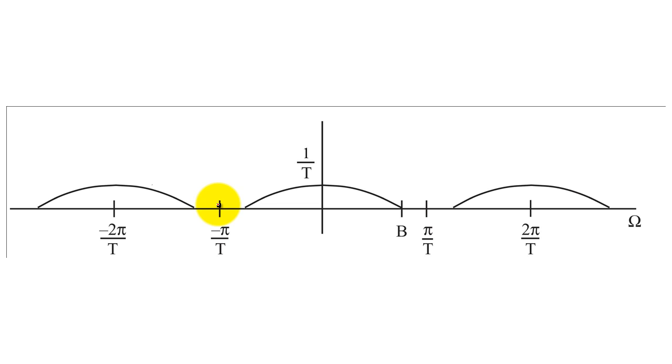We can accomplish both of these tasks with a low-pass filter with a band limit of pi over t that eliminates the replicates created by sampling. The low-pass filter would also need to have height t to counteract the vertical scaling caused by sampling.